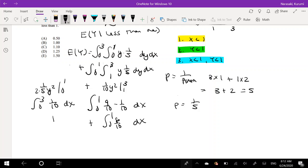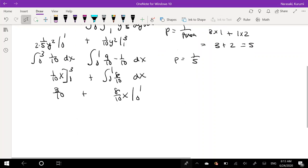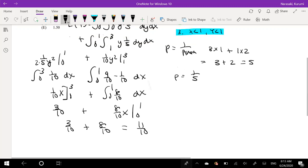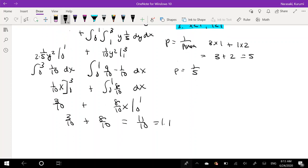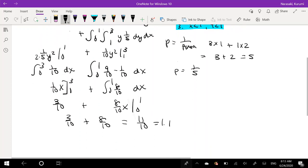Actually, I can just solve this one. This is 1 tenth x, solving from 0 to 3. So that's 3 over tenth plus whatever this side is. So this is 8 tenth x, solving from 0 to 1. So this is equal to 3 tenth plus 8 tenth. So that's 11 over 10. 1.1, which is your answer C.